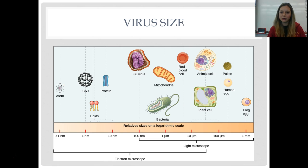Viruses are teeny tiny. If they are broken parts of cells existing on their own, it makes sense they'd be smaller than an actual cell. Here's the influenza virus that causes the flu, and here's a bacterium, a prokaryotic cell — definitely bigger. Did you know that a bacterium is about the same size as a mitochondria, just one little organelle?